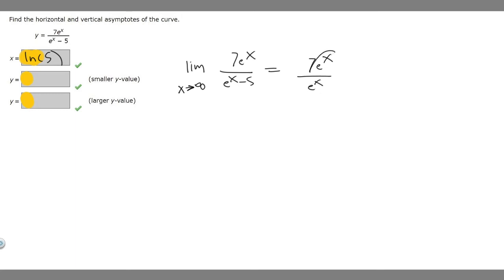So these are going to be the same, right? So what we do is just take a look at the constants out front. So we have 7 and 1, and we divide them. So this is just going to be 7. So one of our horizontal asymptotes is going to be 7.